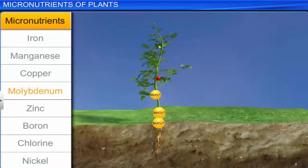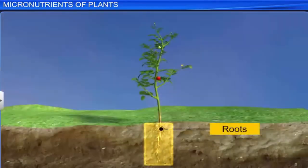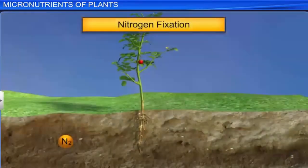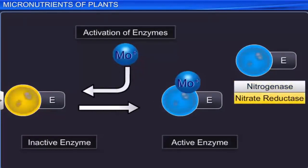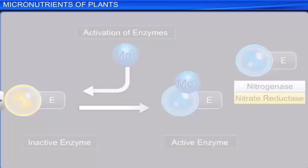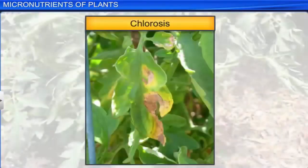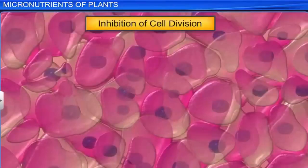Molybdenum is absorbed by plants in the form of molybdate ions. It is particularly needed in the roots. It plays an important role in nitrate reduction and nitrogen fixation. It activates nitrogenase and nitrate reductase, which participate in nitrogen metabolism. Deficiency symptoms include chlorosis and inhibition of cell division.